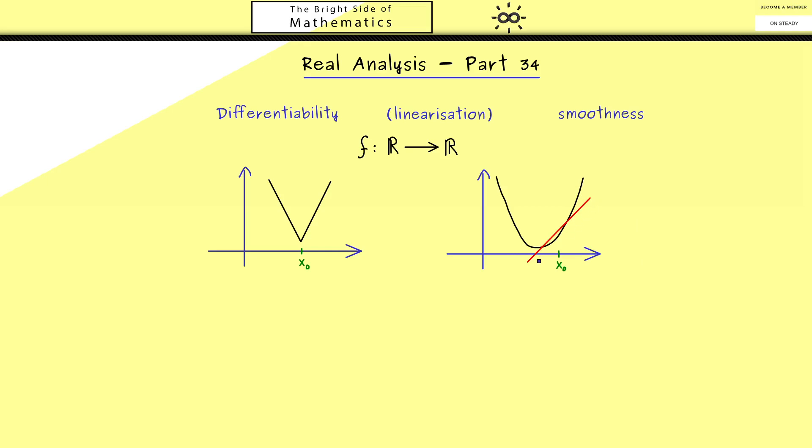Hence the question about the slope at a given point is related to the question if we can approximate a function locally with a linear function. And indeed that's the meaning of the term linearization. Therefore in the next step let's look at a linear function.